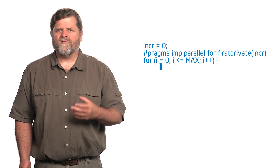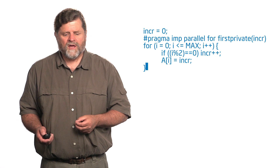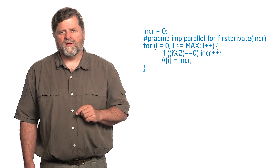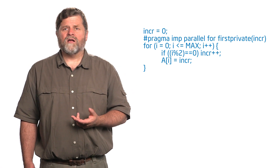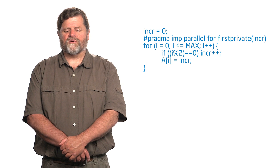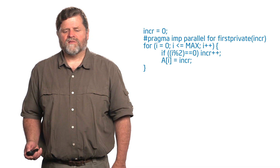Private modifies the data environment to create a private copy of a variable for each thread, but it's uninitialized. What if you want to give it a well-defined initial value? That's what first private does — it creates a private copy but initializes it to the global copy. I have an increment variable INCR equals zero, then pragma OMP parallel for with first private INCR. It creates a private named INCR and initializes it to the global value of zero. That's what first private does.